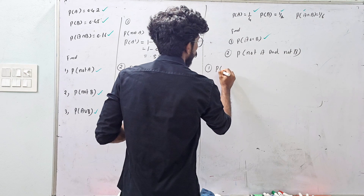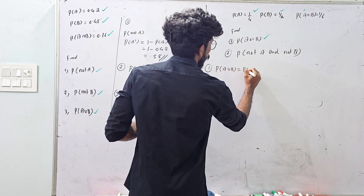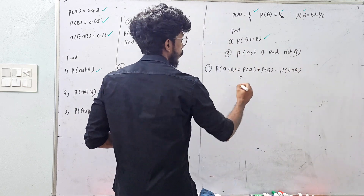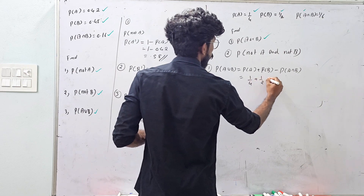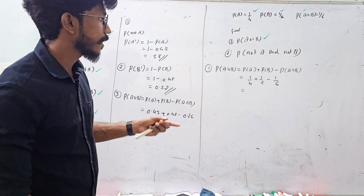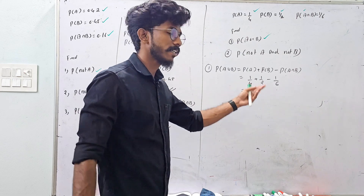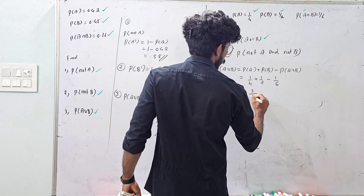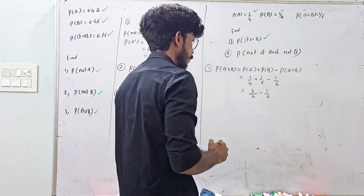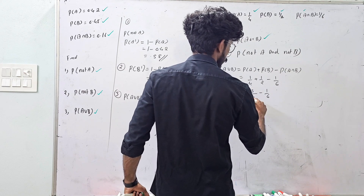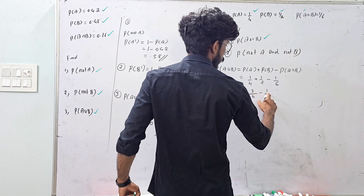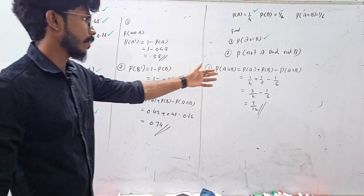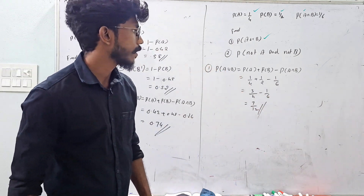Probability of A or B — probability of A union B equals probability of A plus probability of B minus probability of A intersection B equals 1/4 plus 1/2 minus 1/6. Adding the fractions: 3/4 minus 1/6 equals 7/12. The answer is 7/12.